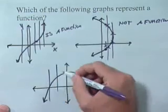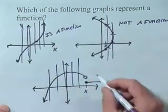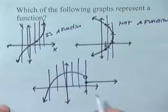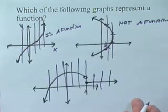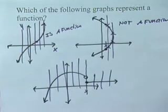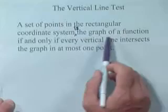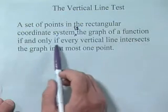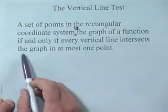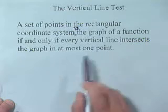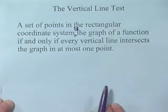Here, any vertical line I draw, I will only get one intersection. Even there, I just get one. So, that's a really important test. Now, I'll go ahead and state it for you. The vertical line test. A set of points in the rectangular coordinate system is the graph of a function, if and only if every vertical line intersects the graph in at most one point. You might want to write that down.